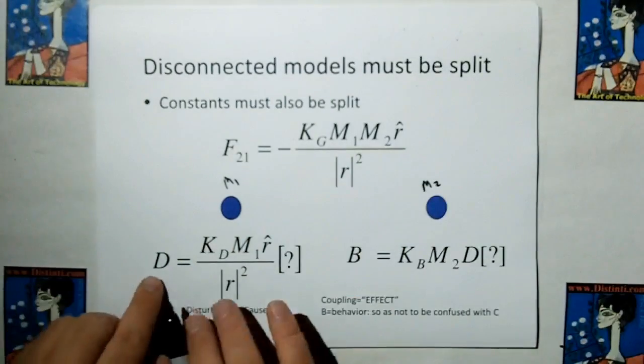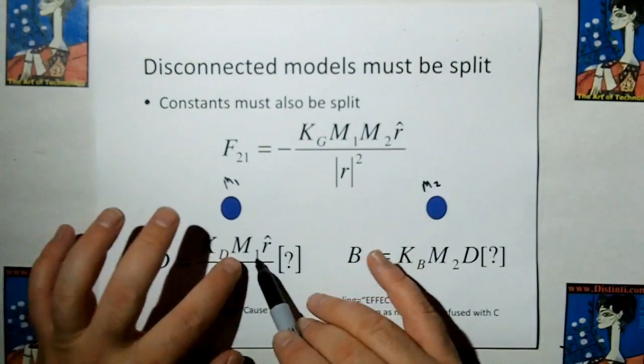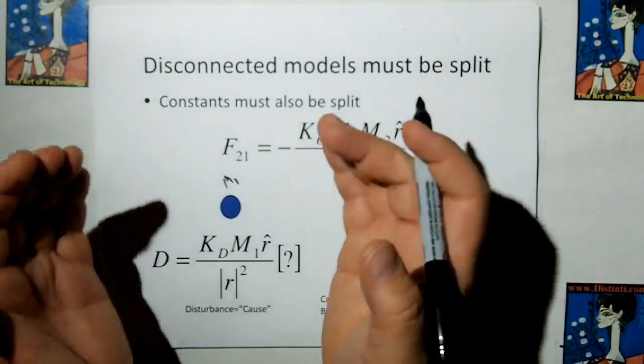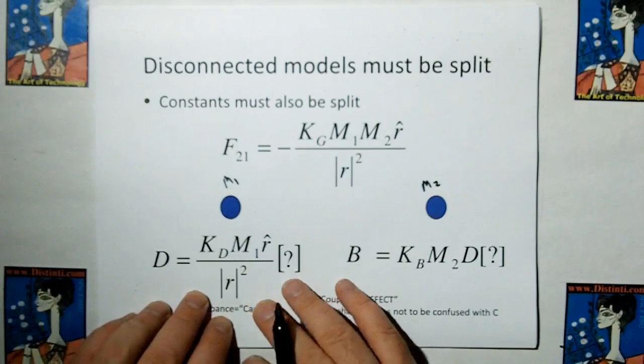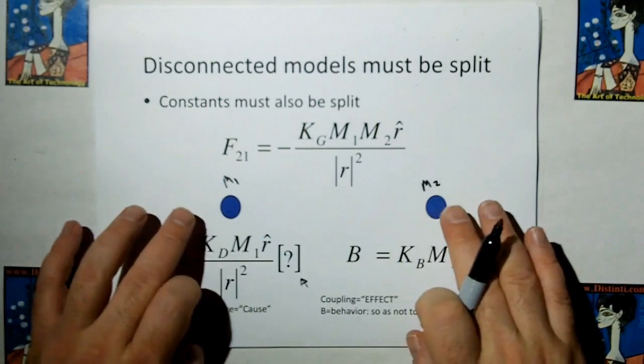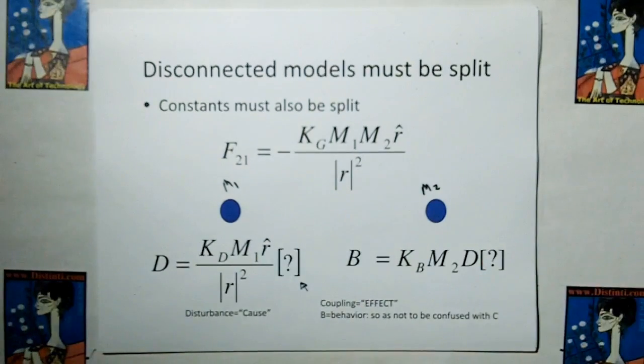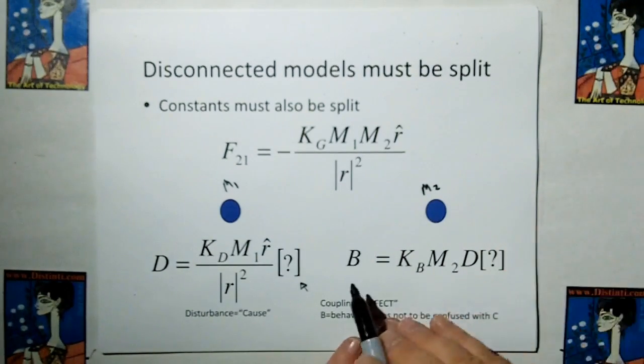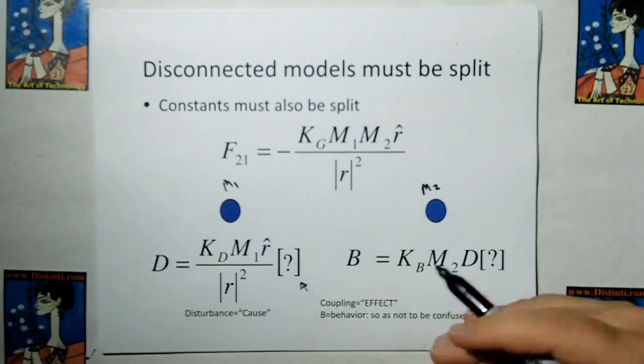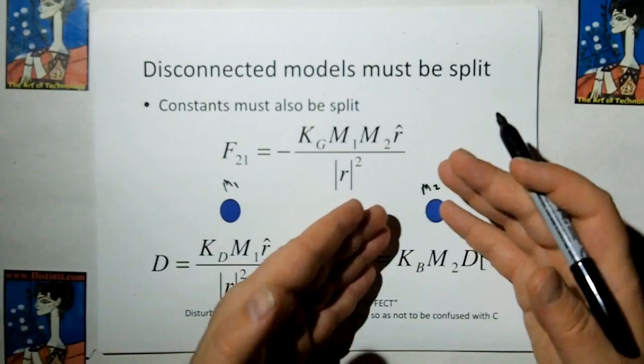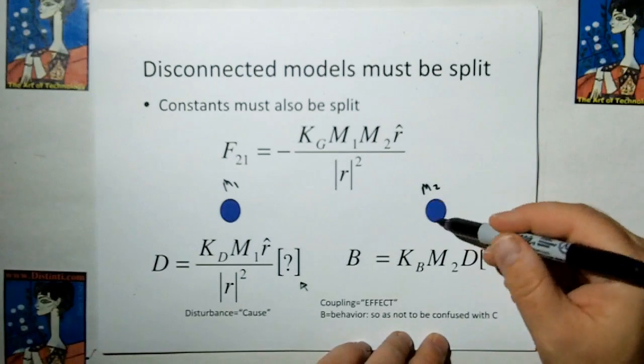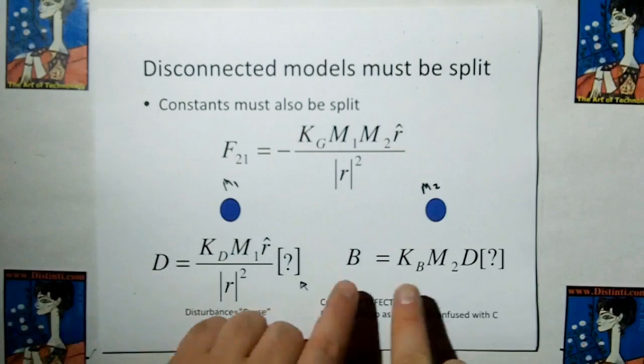So the disturbance, we're going to give the capital letter D for disturbance, is caused by mass one times some constant. We're going to call KD the disturbance constant, which is going to be some kind of ether consumption model here. And there might be more to it than that. There's probably going to be a time lag equation that tells how quickly that disturbance gets to the other mass. Now, on the other side, that model for the coupling is, and I'm going to call it behavior instead of using C for coupling. I do not want to confuse C with the speed of light. So we're going to use B for behavior. So the coupling of the effect is given by some constant we're going to call KB times something to do with the mass of the second object times the disturbance that finally gets there.